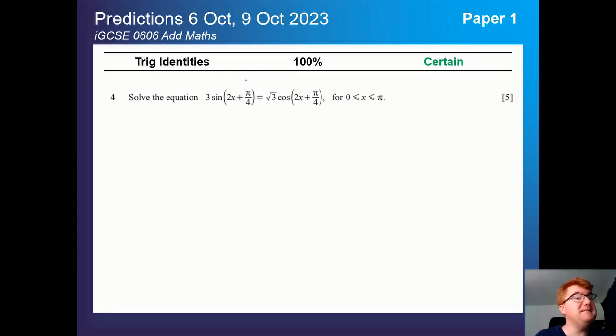Trig identities is in my certain category here. It appears 100% of the time. Now it's a little bit misleading. I also include trig equations in that. You can see a classic example here, question 4, where you need to be able to work with sines and cosines with parts inside the function and be able to find all the solutions within the domain that is given.